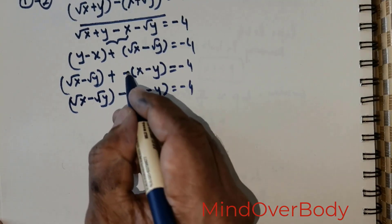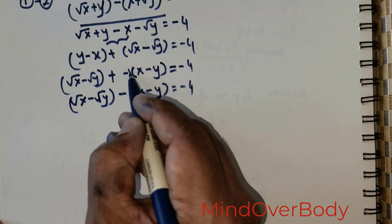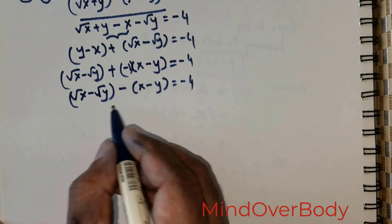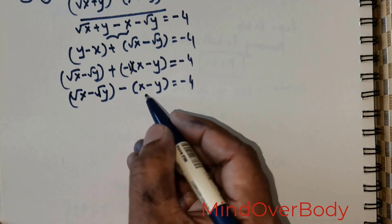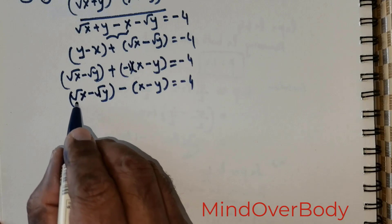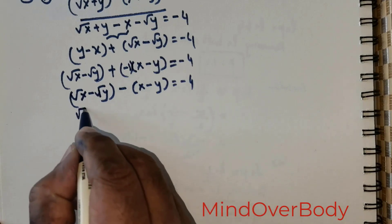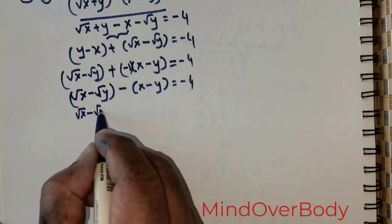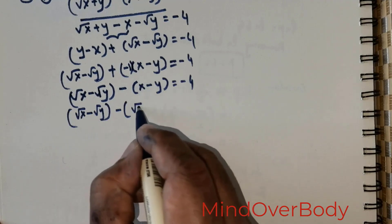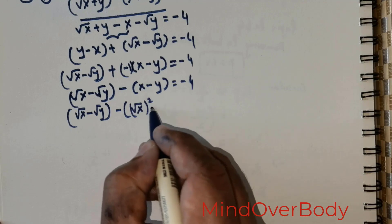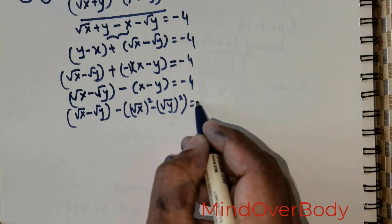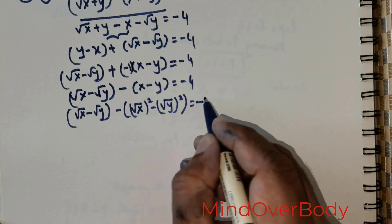So this is what I have got. I will place a negative 1 there just to avoid any confusion. Now I want to simplify this. The best way to simplify this is to convert x and y in terms of root of x and root of y. So the best way to do that is to rewrite x as root of x raised to the power 2, and root of y raised to the power 2, so the expression equals negative 4.